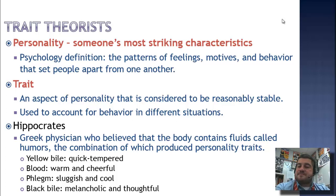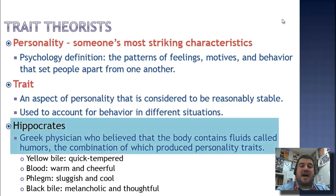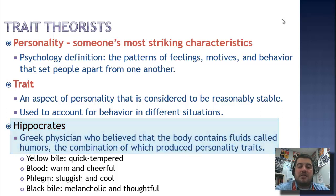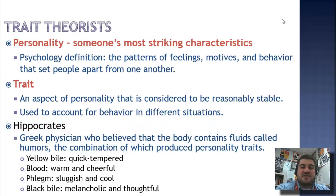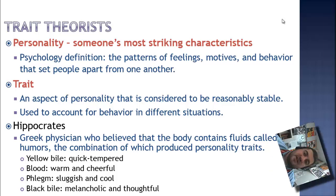One of the first people to experiment with trait theory was Hippocrates, a Greek physician who believed that the body contains different types of fluids called humors. The combination of these four bodily fluids produced personality traits. The four fluids were yellow bile, blood, phlegm, and black bile, and different combinations of those in your body — sometimes they would let different fluids out of your body in order to change your personality. That obviously is not true, but it is one of the earliest theories of traits.